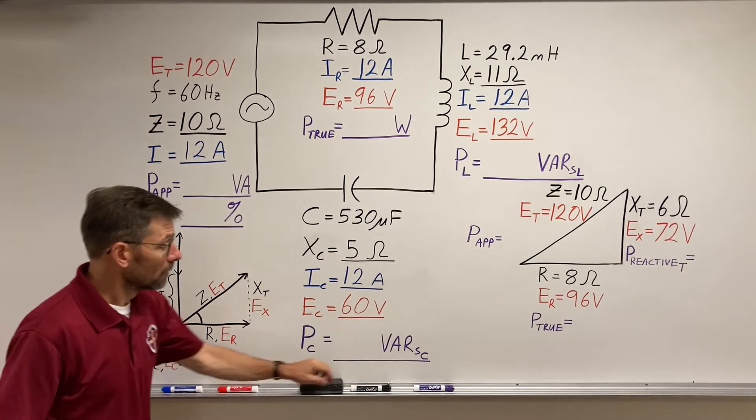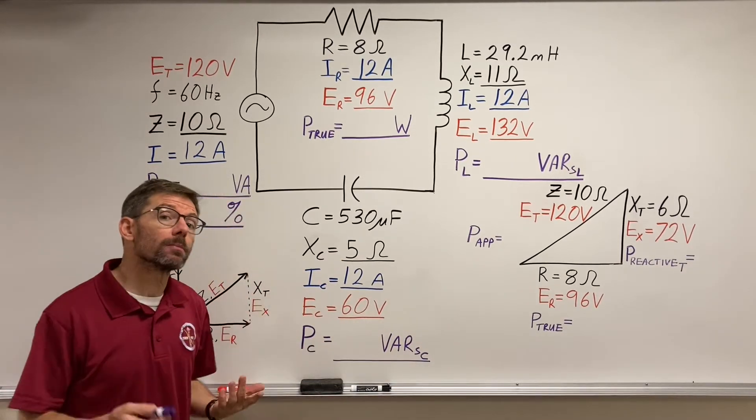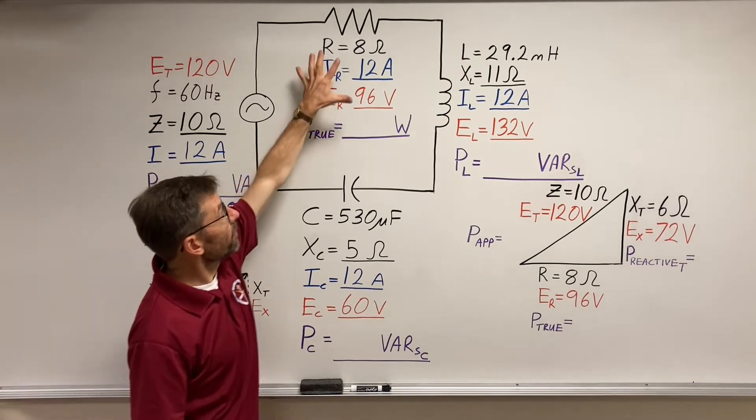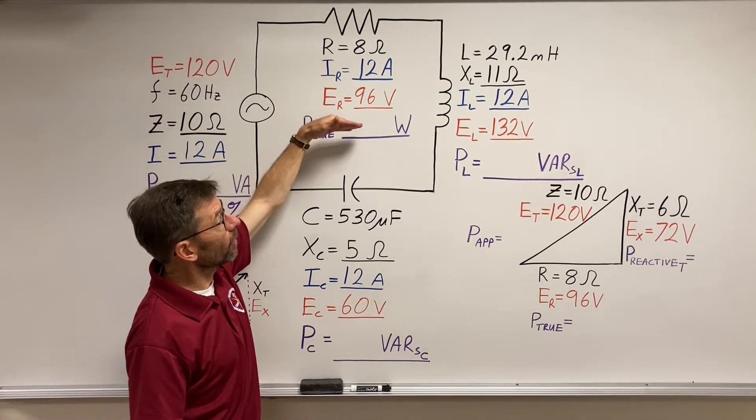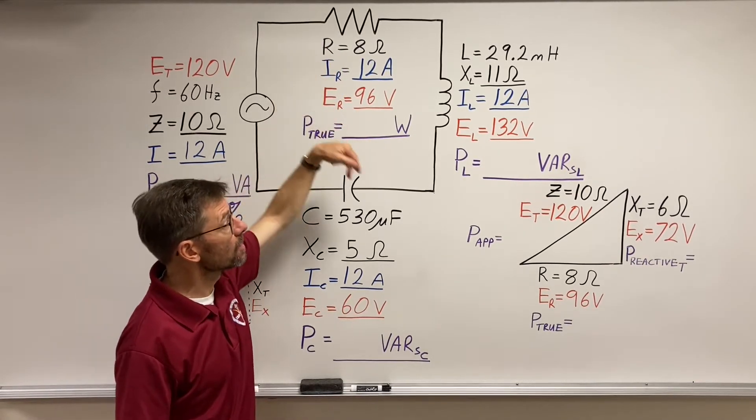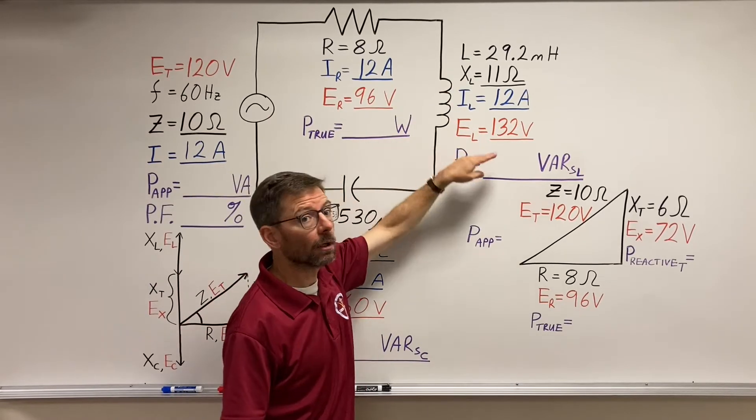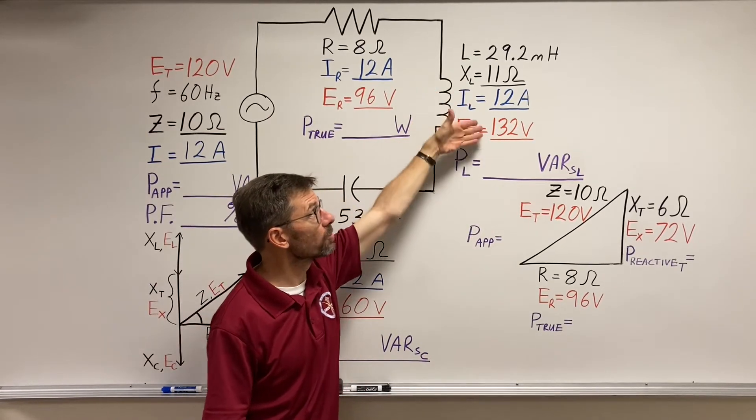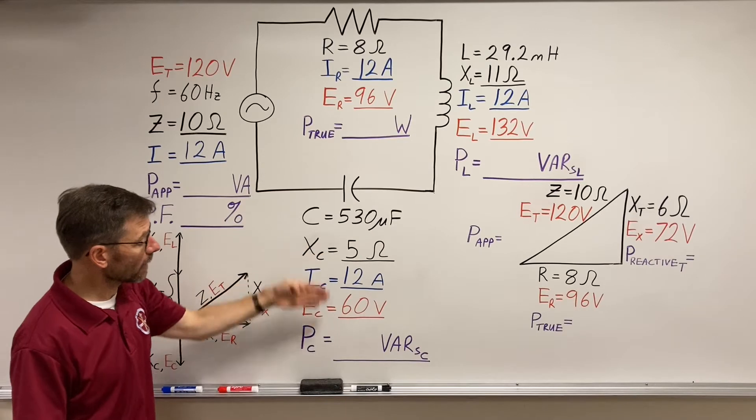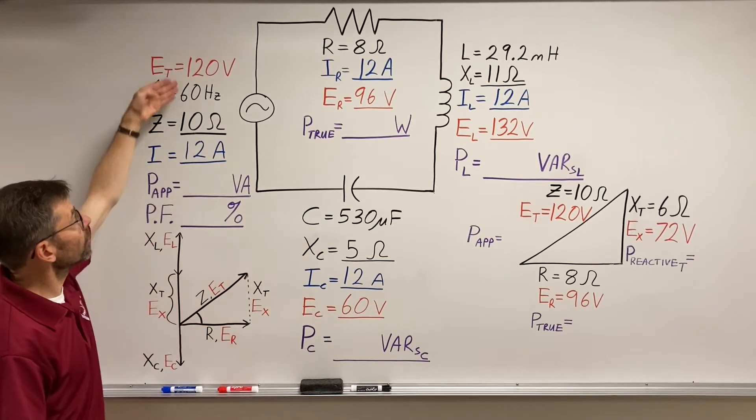Well, what do we do? We really just use Ohm's law because we have the values for the resistor. We could calculate power any number of ways. We could calculate power on the inductor the same way, Ohm's law with these values, and the capacitor, and we could even do the total.